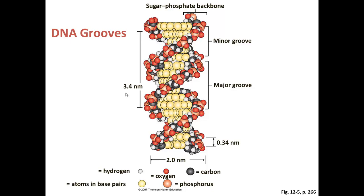DNA also has two grooves: a narrower minor groove and a much wider major groove. These grooves are very important for allowing proteins to interact with the DNA and move along the grooves. The bases are found on the inside of the double helix, whereas the outside of the double helix is composed of the sugar-phosphate backbone. As you recall, phosphates are very negatively charged, making the DNA a negatively charged molecule.